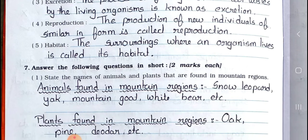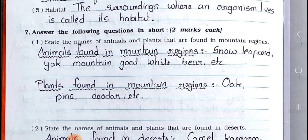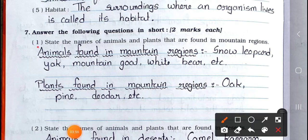See main 7. Answer the following questions in short. Two marks each. Number 1: State the names of animals and plants that are found in mountain regions. Answer: Animals found in mountain regions — snow leopard, yak, mountain goat, white bear, etc. Plants found in mountain regions — oak, pine, deodar, etc.